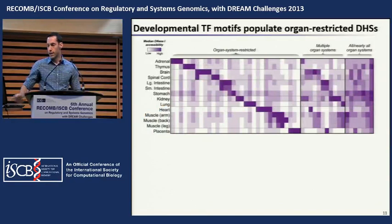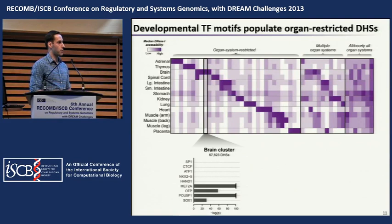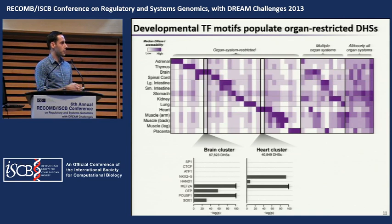What drives this organ-selective pattern of DHS activity? It's the transcription factors binding to these regulatory elements. We find a highly significant enrichment of recognition sequences for transcription factors in different sets of DHSs. In a brain-specific cluster of 67,000 DHSs, transcription factors such as OTP, OCT4 (also known as POU5F1), and SOX1 — known to be involved in neurogenesis — have their recognition sequences highly enriched, as does MEF2A.